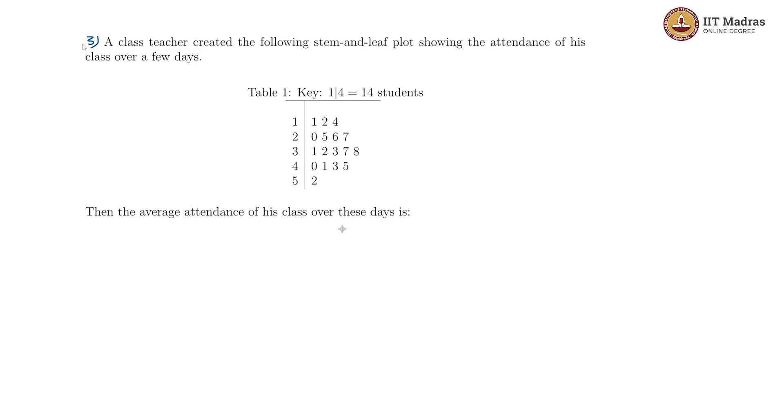In our third question, there is a stem and leaf plot that is shown here, and this is about the attendance of a particular class. There is also a key provided which shows that 1 dash 4 is essentially 14 students. So if this is 1 and this is 4, that would imply 14 students on a particular day.